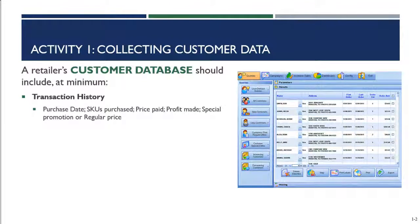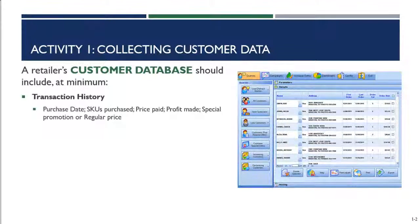A lot of this transaction history comes directly from our point-of-sale machines or cash registers. This goes back to having an information systems structure in place so that transaction data can be immediately captured and put into our database. It's really easy to tie this data to a specific customer's account if they use a credit card, provide their phone number, driver's license, or name — all of this helps tie data together in the database.